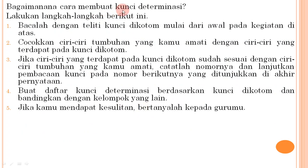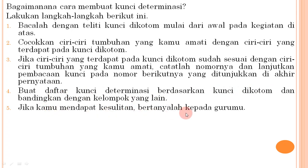Cara membuat kunci determinasi: pertama, baca dengan teliti kunci dikotom dari awal; kedua, cocokkan ciri-ciri tumbuhan yang diamati dengan ciri pada kunci dikotom; ketiga, jika sudah sesuai, catat nomornya dan lanjutkan pembacaan kunci pada nomor berikutnya; keempat, buat daftar kunci determinasi berdasarkan kunci dikotom dan bandingkan dengan kelompok lain; kelima, jika ada kesulitan, bertanyalah kepada guru atau teman yang menguasai.